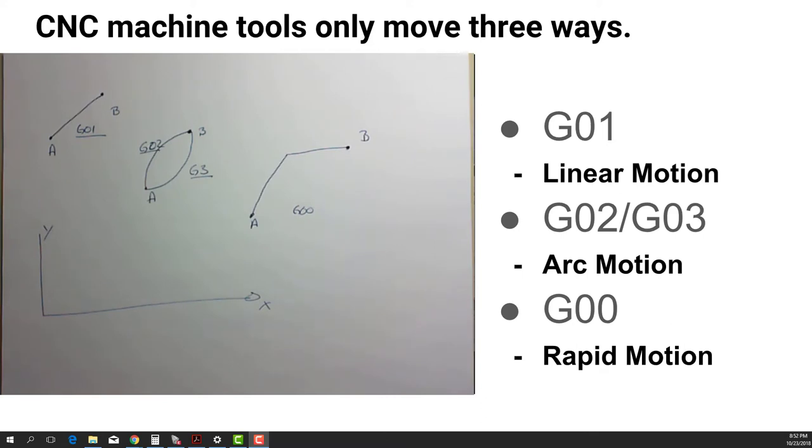Although there are over 100, maybe 150 different G and M codes that we use to control the machine tool, only four of them control the motion of the machine. And those are the only motions that the machine can make.